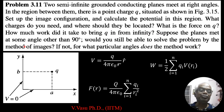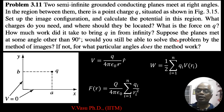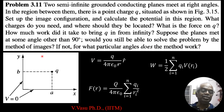How much work did it take to bring the charge Q from infinity? Suppose the planes met at some other angle other than 90 degrees — would you still be able to solve the problem by the method of images? If not, for what particular angles does this method work? So these are the questions. We have two semi-infinite grounded conductors: one along the X direction and one along the Y direction. The charge is located at distance A along the X axis and P along the Y axis, with both conductors grounded.